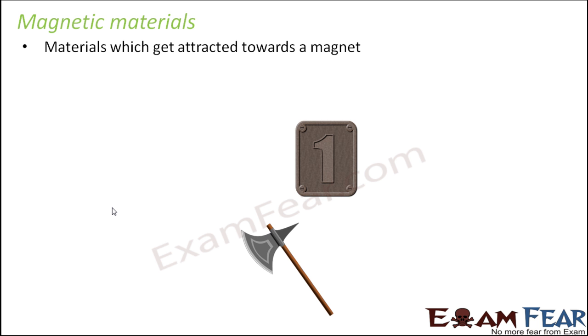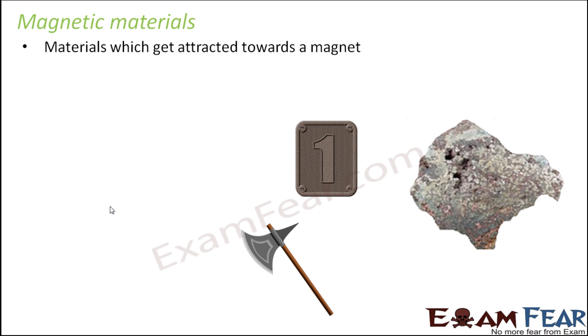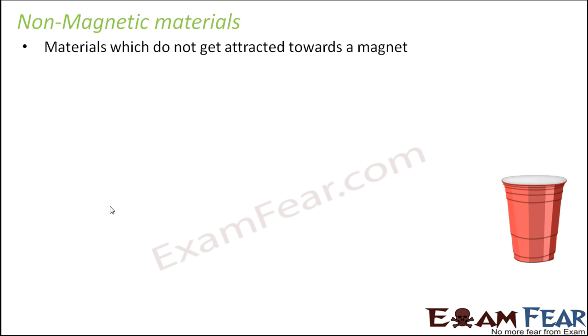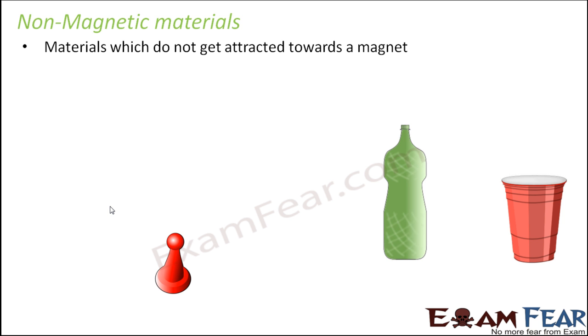Depending upon whether a material will get attracted or not, all materials are classified into two categories: magnetic materials and non-magnetic materials. Magnetic materials are those which get attracted towards a magnet — examples include anything made up of metals like iron, cobalt, and nickel. Non-magnetic materials are those not attracted towards a magnet, for example paper, plastic, coins used in chess, glass, and paper bits. When you bring them near a magnet, they do not get attracted, so they fall under the category of non-magnetic materials.